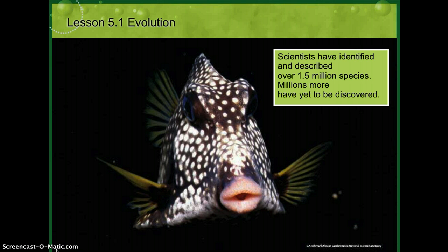Scientists have identified and described over 1.5 million species, and millions more have yet to be discovered. Of the 1.5 to 1.8 million species described by scientists, we think the total number of species in the world ranges between 13 million and 20 million. Most of those species yet to be named are thought to be in the tropical rainforests, though there is still much to explore in our oceans as well.